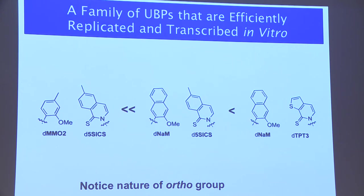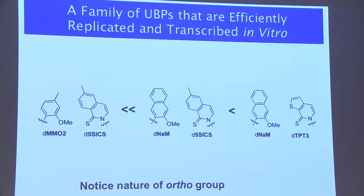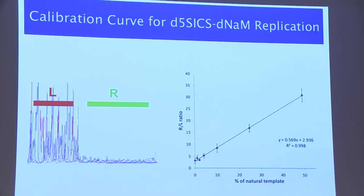This very quickly reinvigorated our design efforts, and within months we had identified a naphthalene-methoxy derivative as being a better partner for 5-6. This was the first pair we could really PCR amplify with high fidelity. Since its discovery, we have found TPT3 as a better analog and partner for NAM. I'm going to spend most of the rest of my talk talking about the NAM/5-6 pair.